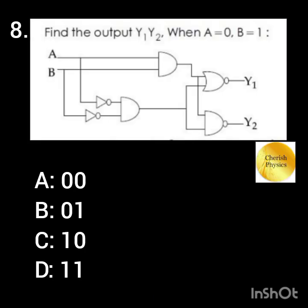Find the output y1, y2 when a equals 0 and b equals 1.